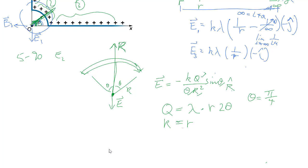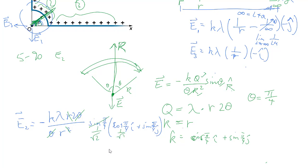So r hat, in this case, is going to be cosine pi over 4, again 45 degrees, in the i hat, plus sine pi over 4 in the j hat. Putting it all together, E2 is equal to all that fun stuff. Say that theta goes away, one of the r cancels one of those r's. We have this thing, which is, in fact, 1 over root 2, 1 over root 2, 1 over root 2.